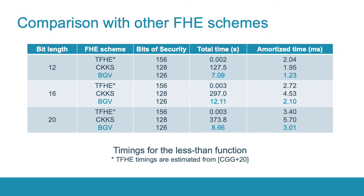In comparison to other HE schemes, our work is one of the fastest with relation to amortized time per integer. Note that it was believed that the BGV/BFV schemes are inherently slower for comparison operations than the TFHE-like schemes. Our work demonstrates that they have almost the same performance.